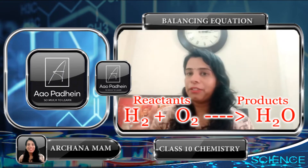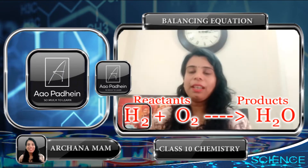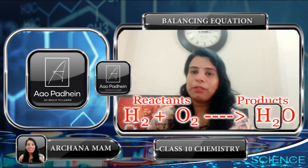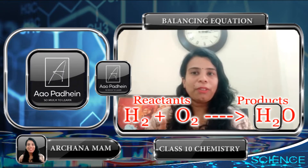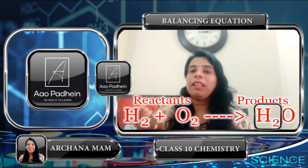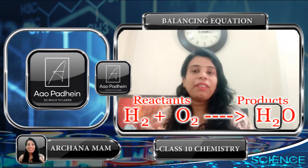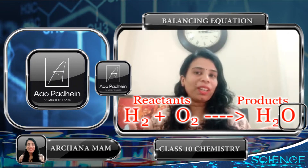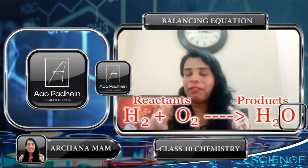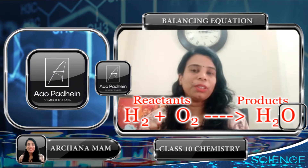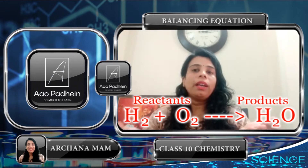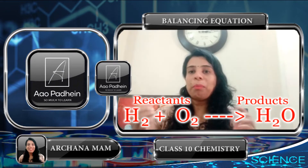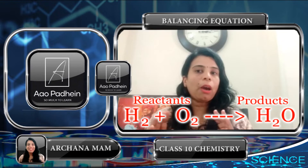In the reactant side we have 2 hydrogen, and in the product side we also have 2 hydrogen. But in the case of oxygen, in the reactant side we have 2 oxygen, while in the product side we have only 1 oxygen. So first we have to balance the number of oxygen atoms on both sides.